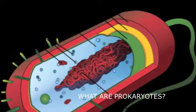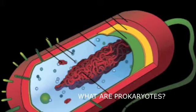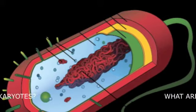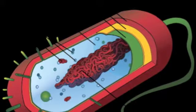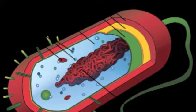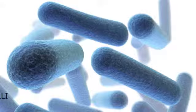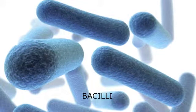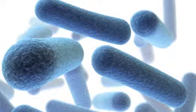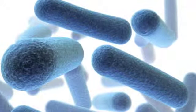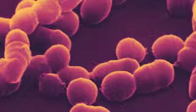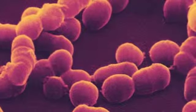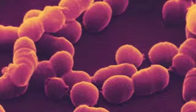Prokaryotes are single-celled organisms that can only be viewed through a microscope. There are three main structures of bacteria: rod-shaped, round-shaped, and spiral-shaped. A rod-shaped bacteria is called bacilli and has the shape of an oval. Round-shaped bacteria is called cocci and has the shape of a circle.